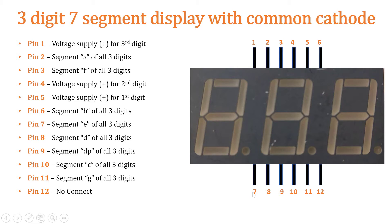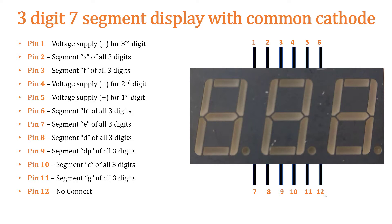Then we have the 7th pin at the bottom, which is for providing the ground to segment E. Then we have pin 8, which is for segment D. Then we have pin 9, which is for providing the ground to the decimal points — so these are the three decimal points. Then we have pin 10, which is for providing the ground to segment C. Then we have pin 11, which is for providing the ground to segment G — this middle horizontal LED is segment G. Then we have pin 12, which is no connect, meaning we are not going to connect anything with this pin.